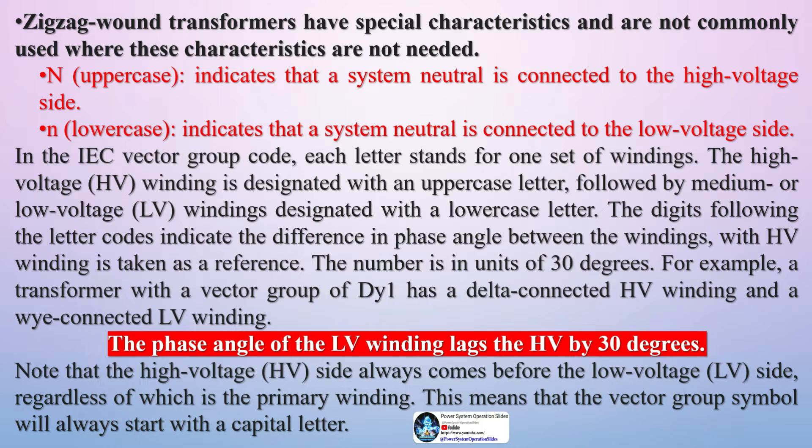There is a symbol to specify the vector group, and by this, you can understand it very easily. For example, when the symbol shows YY0, this means that the primary winding is star, secondary winding is star, and the vector group is zero.